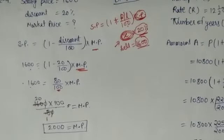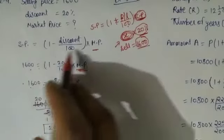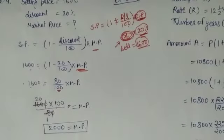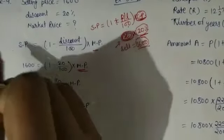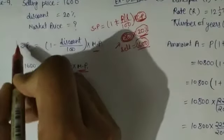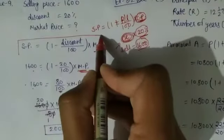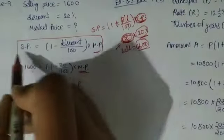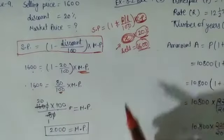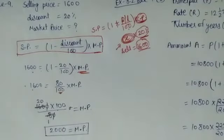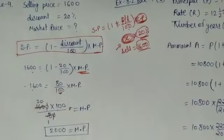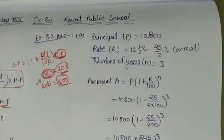Question number 10 is for you to complete yourself. There are many methods available on Google, but I don't want you to be more confused. I want to tell you one formula so you can use that and be less confused.